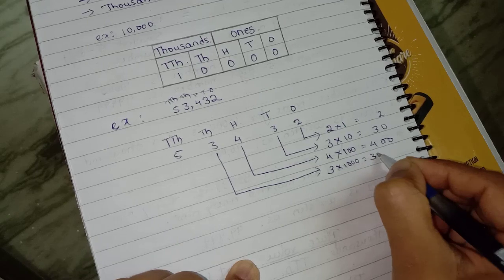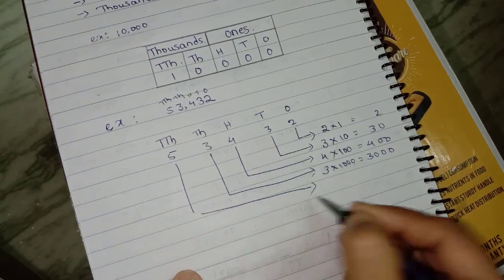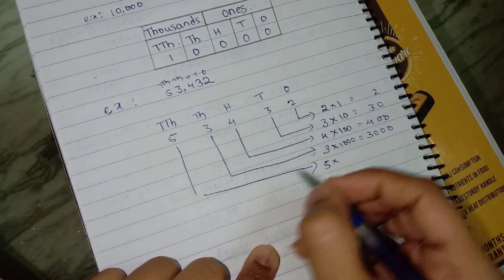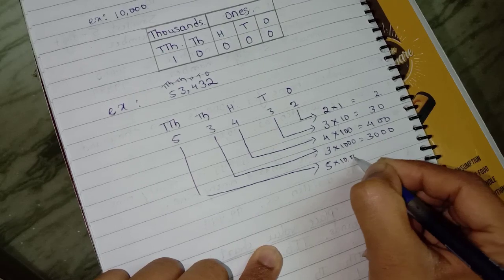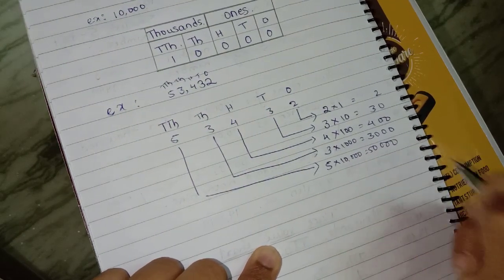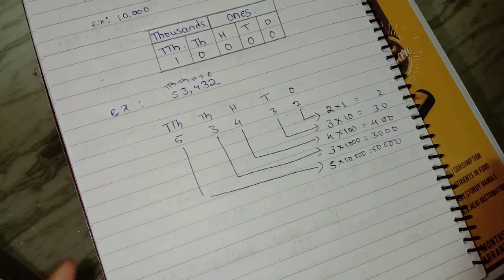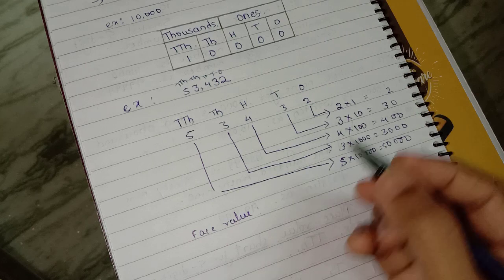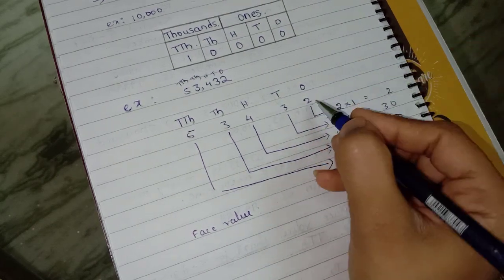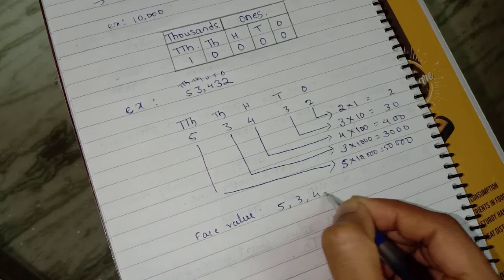The next digit is 3, which belongs to thousands place, so 3 × 1000 = 3,000. The last digit is 5, which belongs to ten thousands place, so 5 × 10,000 = 50,000. So these are the place values for all the digits.